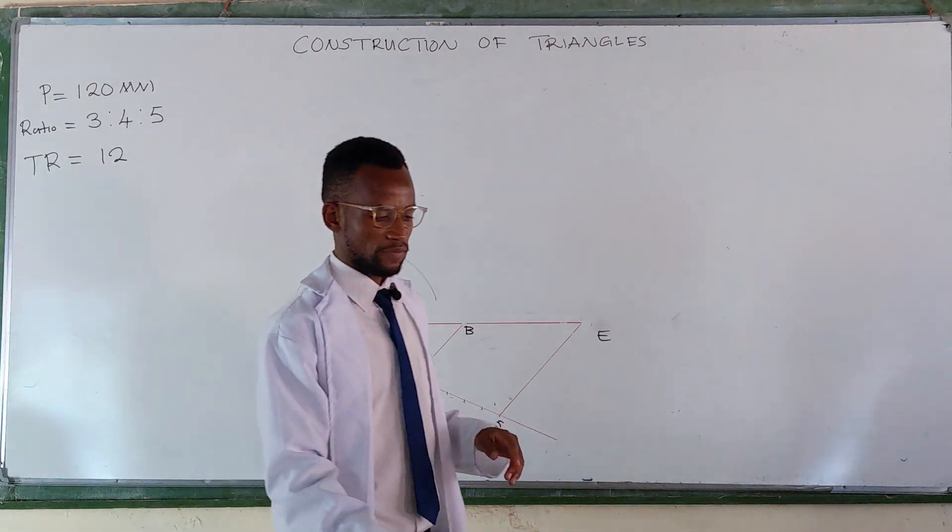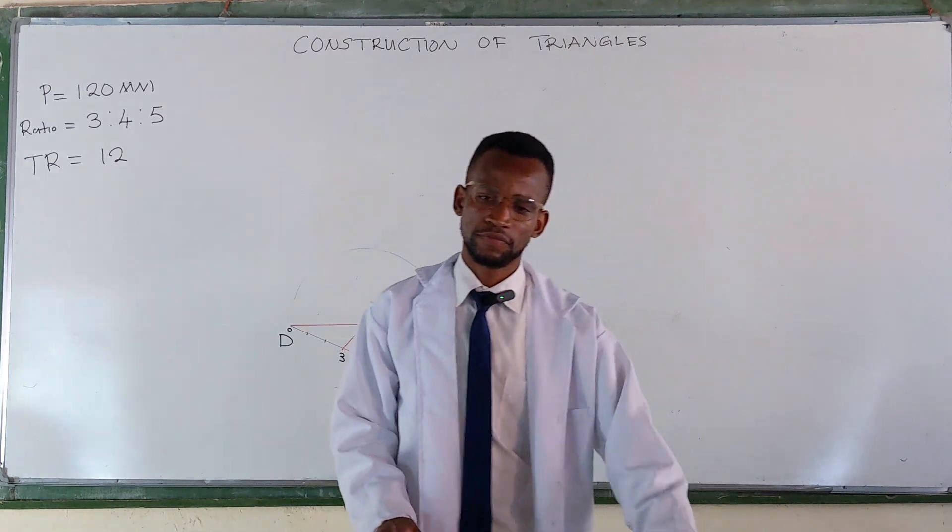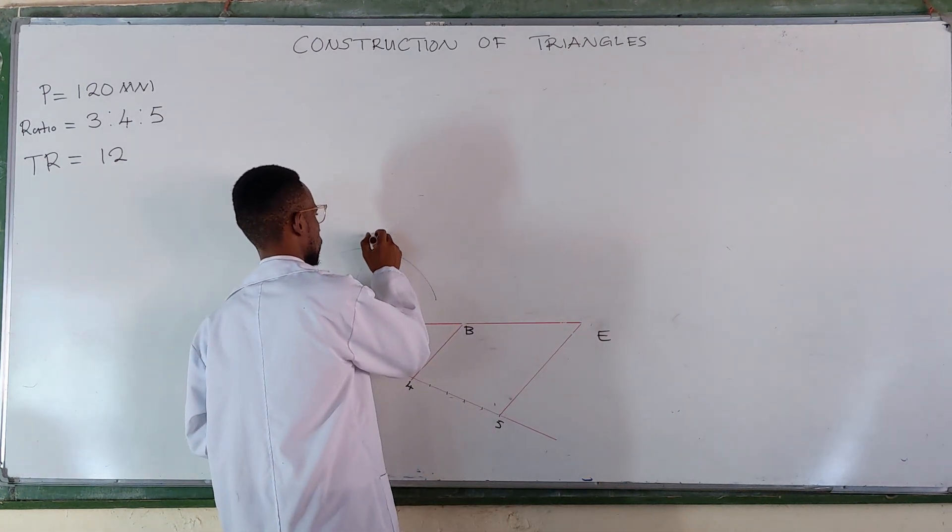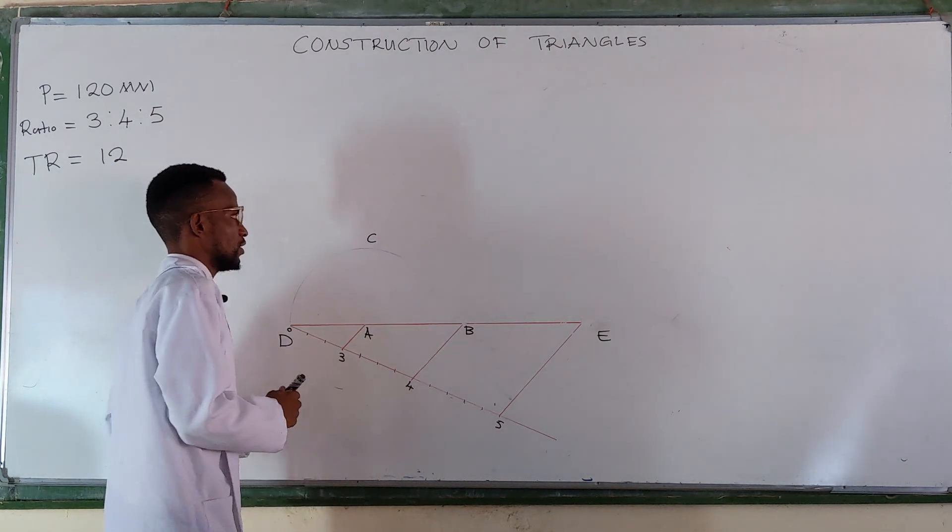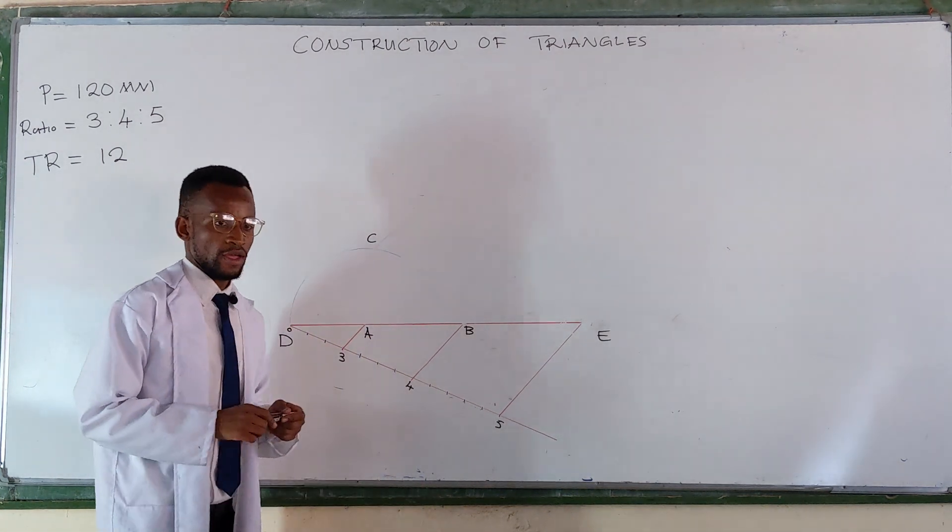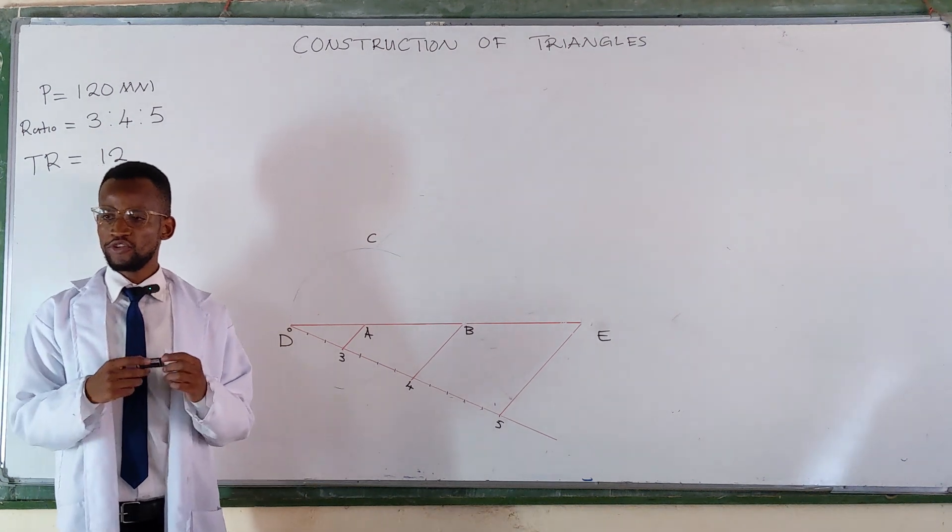Where the two arcs are meeting, that's your point C. Locating point C, you can safely draw your triangle.